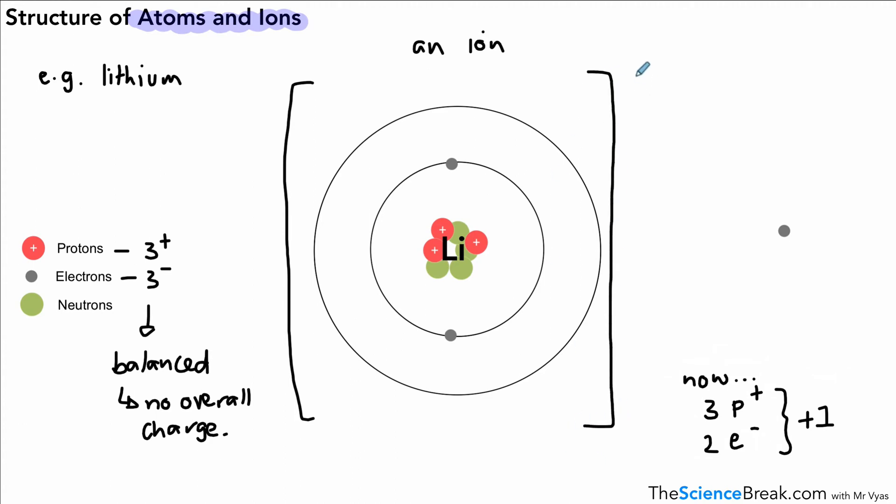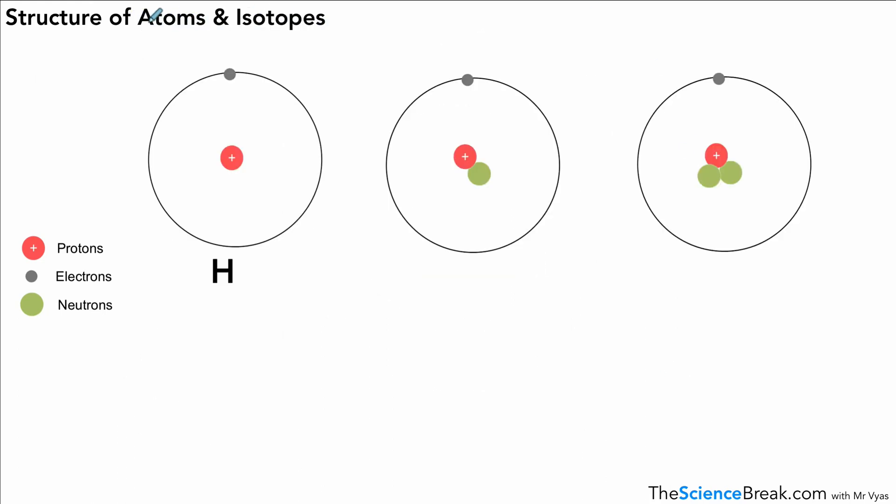And we often draw ions like this with square brackets and a charge in the top right corner.